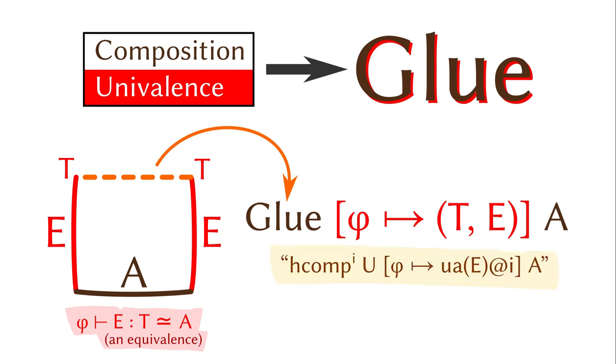You can think of a glue type as a combination of univalence and homogeneous composition. It's like using the univalence to turn equivalences into paths and then compose the box into a new type. Other variants of cubical type theory have separate type constructors for composition and univalence, instead of just the glue types. Either way works, and we will focus on the glue types today.